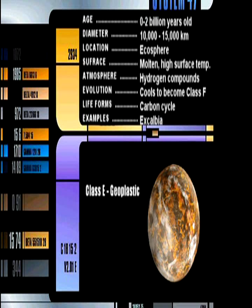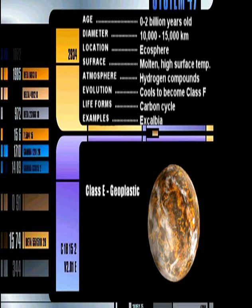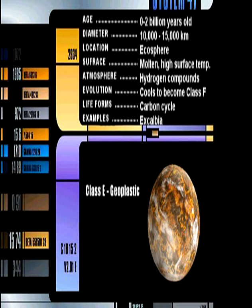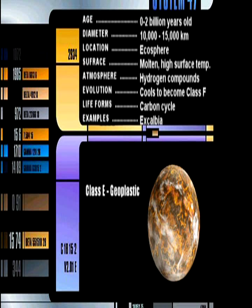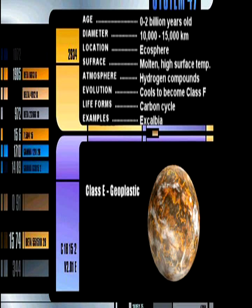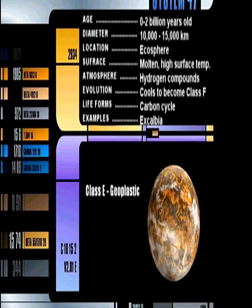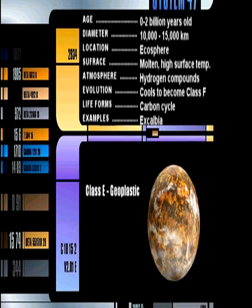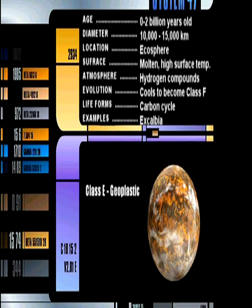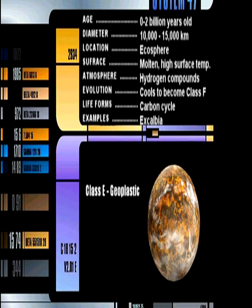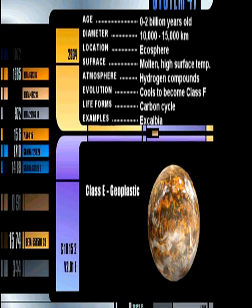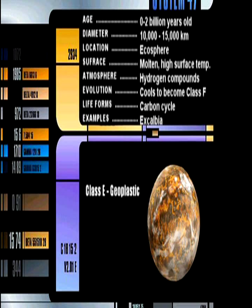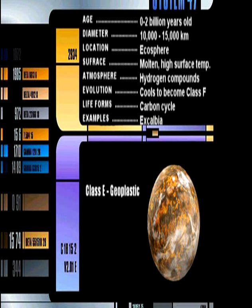Class E Geoplastic. Class E planets represent the earliest stage in the evolution of a habitable planet. The core and crust is completely molten, making the planets susceptible to solar wind, radiation, and subject to extremely high surface temperatures. The atmosphere is very thin, composed of hydrogen and helium. As the surface cools, the core and crust begin to harden and the planet evolves into a Class F world.